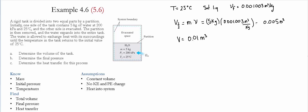The next step is to find the final pressure. In order to do that we need to determine what phase the water is in at the end of the process. We calculate the specific volume at the final step: the final volume of 0.01 meter cubed divided by the mass of 5 kilograms, giving a specific volume of 0.002 meter cubed per kilogram.